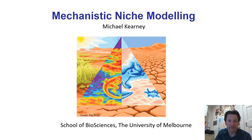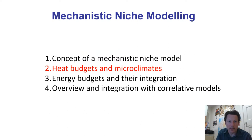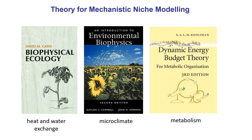This is the second part of the Mechanistic Niche Modelling lecture for the Ecological Niche Modelling course for 2020. In the first lecture I gave an outline of the concept of a mechanistic niche model. In this part I'm going to talk about heat budgets and microclimates — specifically biophysical ecology, microclimate modelling, and energy budget modelling.